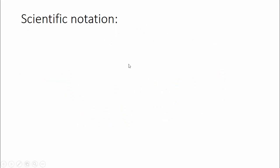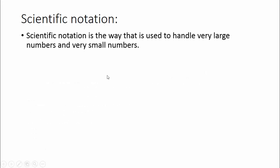So what are scientific notations? Scientific notation is the way that is used to handle very large numbers and very small numbers. For example, here you can see a very large number.